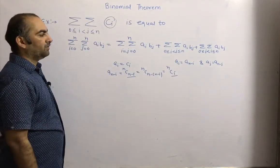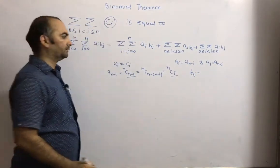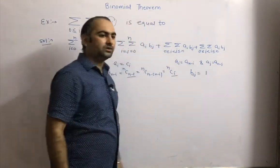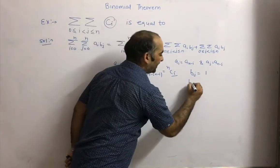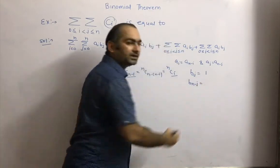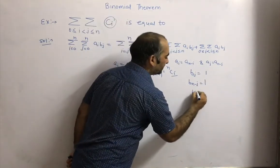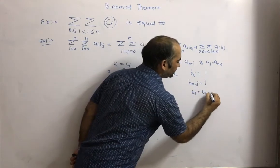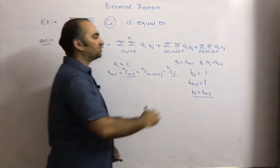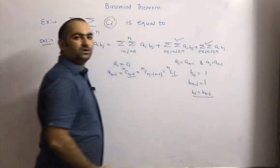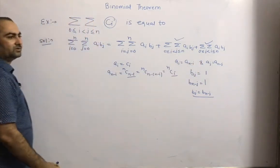Since both series are symmetric, the two off-diagonal sums are equal. We can therefore write: sigma i=0 to n, sigma j=0 to n of nCi · 1 equals sigma sigma i=j from 0 to n of nCi · 1 plus two times sigma sigma 0 ≤ i < j ≤ n of nCi · 1. We need to find this last double sum.